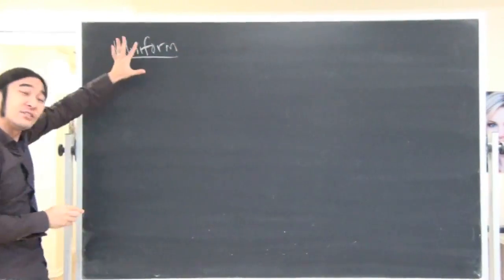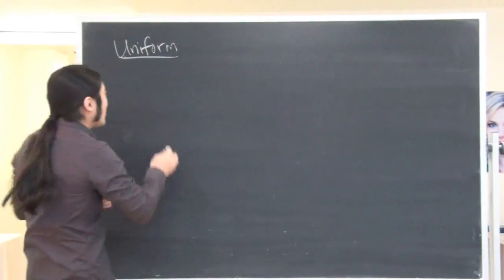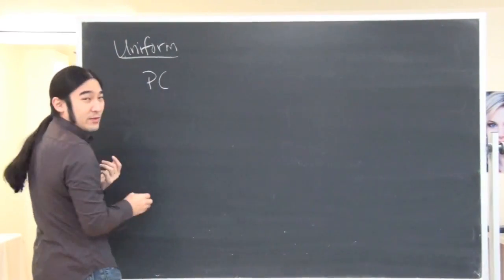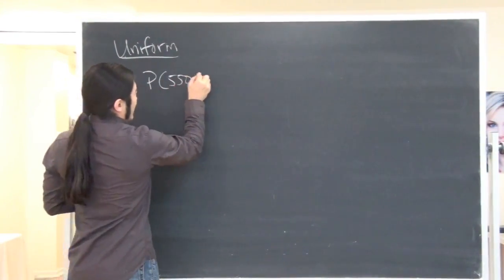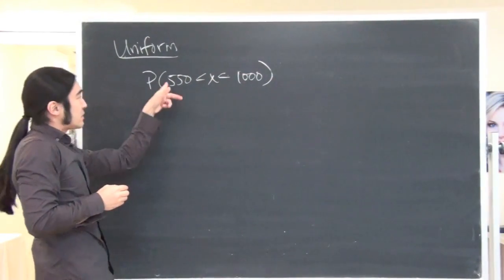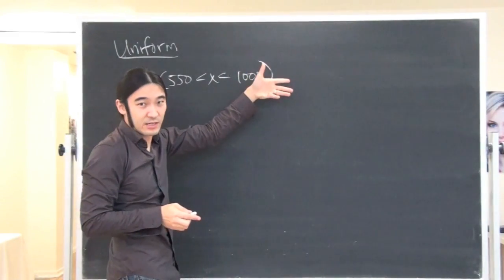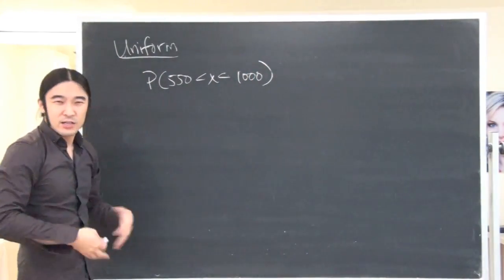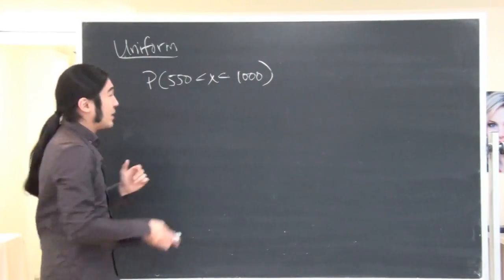So, someone asked a question about uniform distributions. And again, I'm not going to reteach this, I'm just going to work on that one problem. So, the problem they asked was, what can you tell me about the probability that you pick a number at random and it's somewhere between 550 and 1,000.